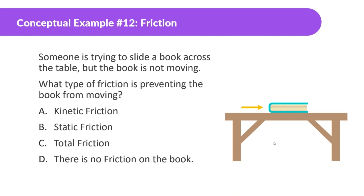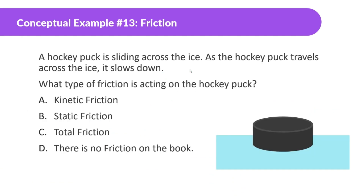Next example: someone is trying to slide a book across the table, but the book is not moving. What type of friction is preventing the book from moving? The key word is 'not moving' — that's going to be static friction. Another example: a hockey puck is sliding across the ice and it slows down. What type of friction is acting on the hockey puck? The key thing here is it's sliding and slowing down — it's moving — so that means we have kinetic friction.